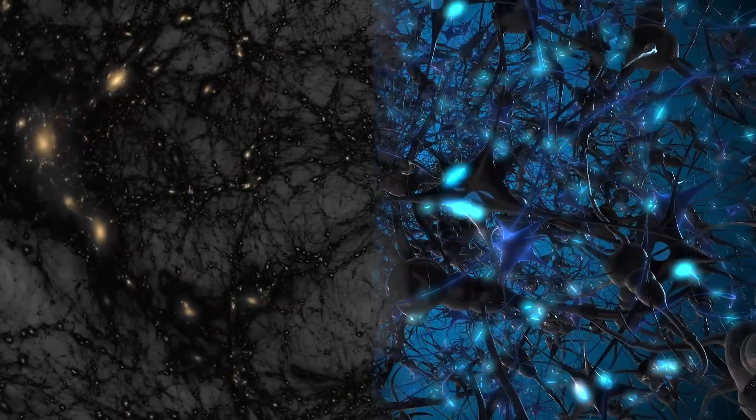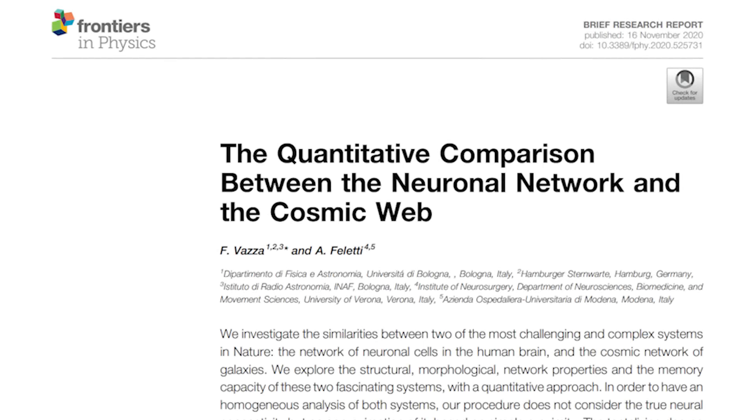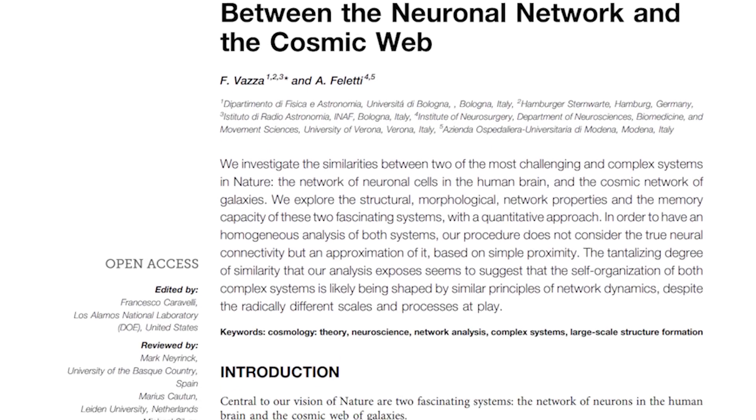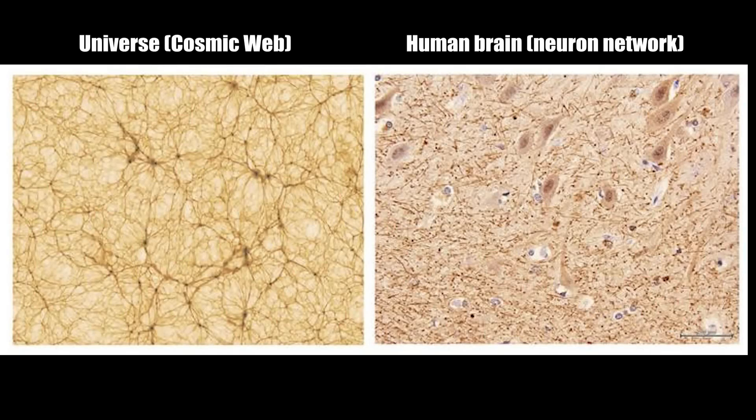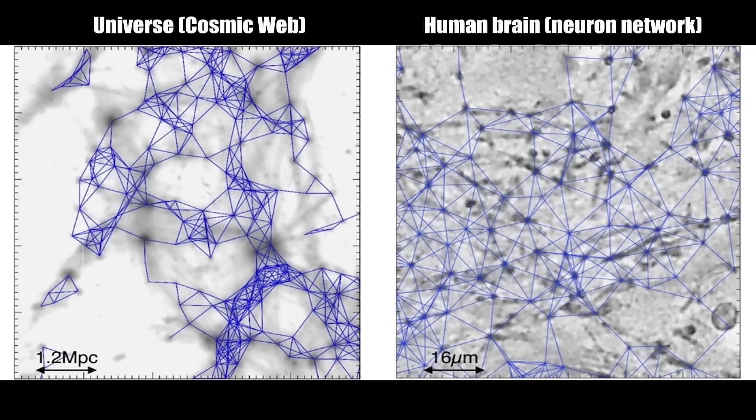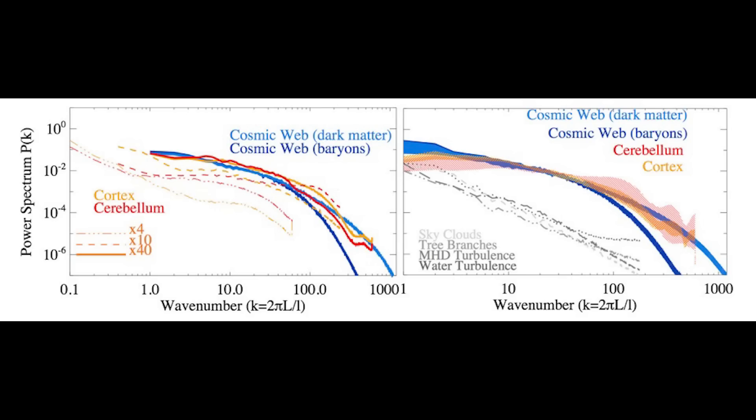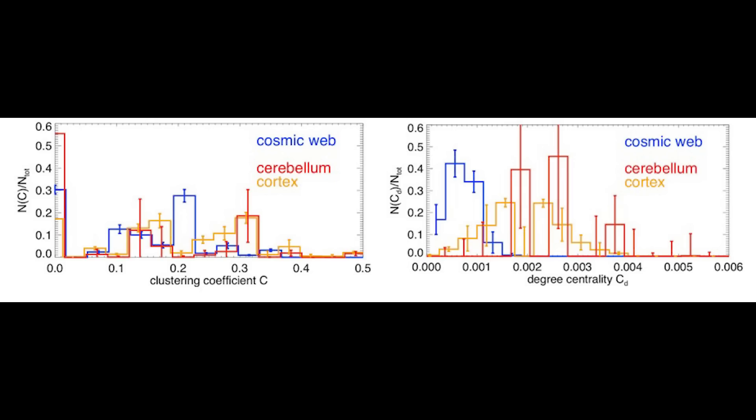However, some seemingly definitive research was published in 2020. The neuronal network of our brains resembles the cosmic web of the universe in all aspects: structurally, morphologically, and in terms of network characteristics and memory capacity.